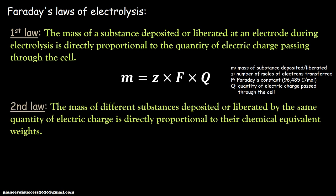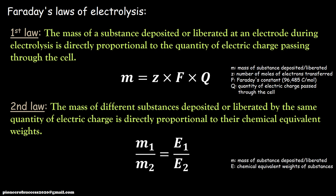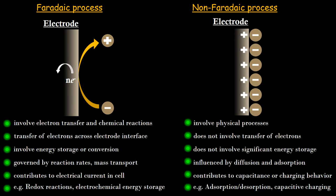The second law states that the mass of different substances deposited or liberated by the same quantity of electric charge is directly proportional to the chemical equivalent weight. In this case, Q is constant, but we are considering two different cases with different equivalent weights of the materials being deposited. Mass deposition is proportional to the equivalent weight — that means M1 divided by M2 equals equivalent weight 1 divided by equivalent weight 2.